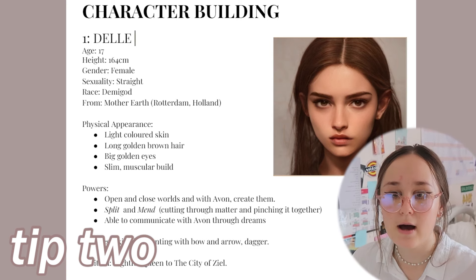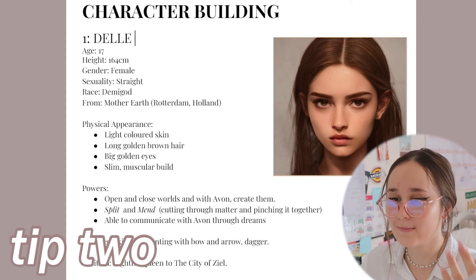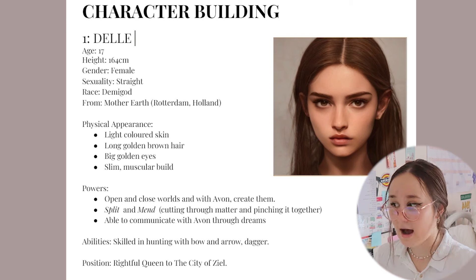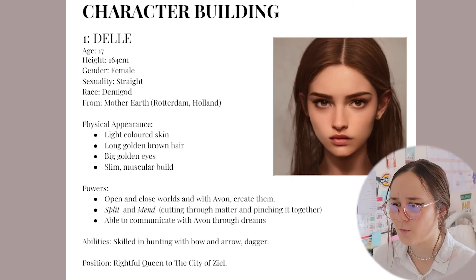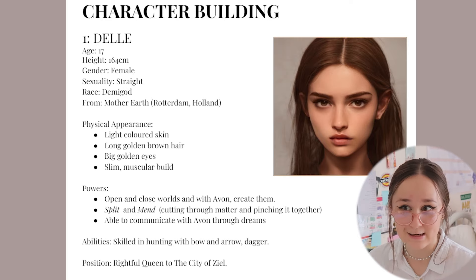For example, glasses — maybe you can make the assumption that they're smart, or maybe they had an injury in their eye. Something like that gives them more character. Or maybe they have freckled skin, or they always wear eyeliner. Stuff like that is important to pop in here. I just did the bare minimum: skin, hair, eye color, and their build — those are the four key things in this physical appearance header.